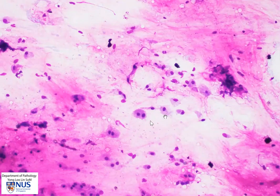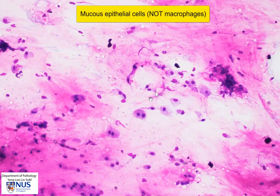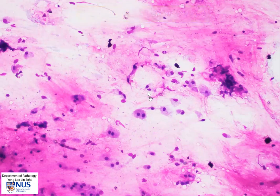We also have these single cells which quite closely resemble macrophages in the background. These are very polygonal, very large, and have extremely low NC ratios. These are likely to represent mucus cells and should not be mistaken for macrophages. Usually the nuclei are more eccentric, and the cytoplasm is not as foamy as you would see in macrophages. Also, the nucleus is not bean-shaped.